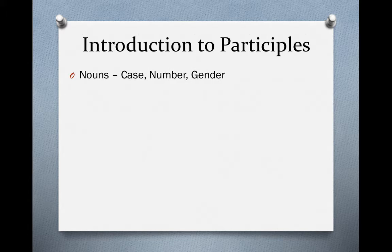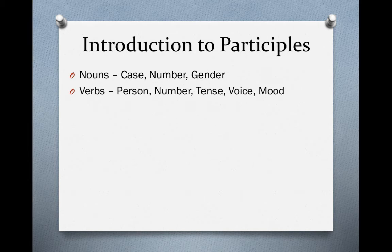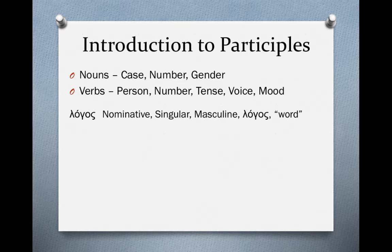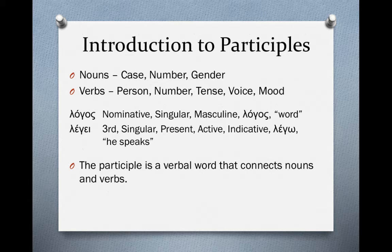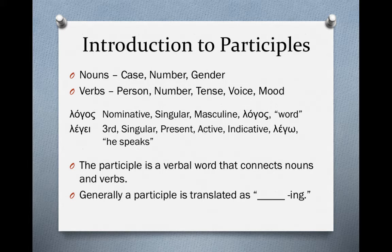When we parse nouns we look at case, number, and gender. For verbs we identify person, number, tense, voice, and mood. The only overlap is number, because nouns and verbs have different functions and are parsed differently. For instance, if we parse logos we say nominative singular masculine from logos, meaning 'word.' If we parse legei we say third singular present active indicative from lego, meaning 'he/she/it speaks.' The participle is a verbal word that connects nouns and verbs.